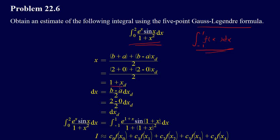Then we can find dx. dx is equal to b minus a over two. And b minus a is two minus zero divided by two, which is one. So dxd is equal to dx — we don't really have to do anything there.